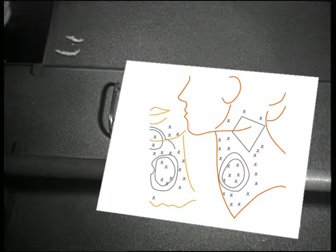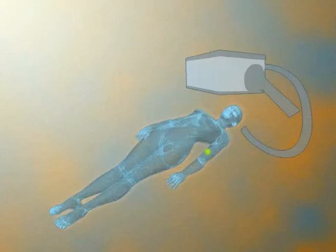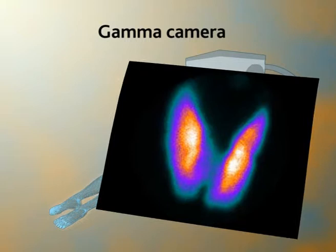The arrival of the gamma camera in the 1960s revolutionized nuclear medicine by incorporating imaging. To obtain an image, the radioactive medium is introduced into the body. The medium attaches itself selectively to the organ to be examined. The gamma camera detects the radiation that is emitted, and the computer system reconstructs the accurate image of the distribution of the tracer in real time.